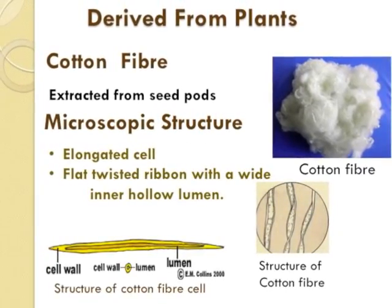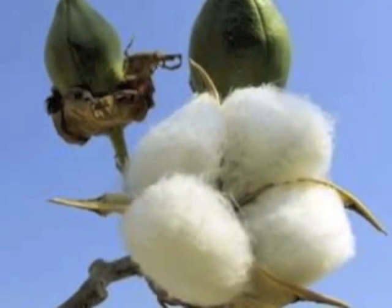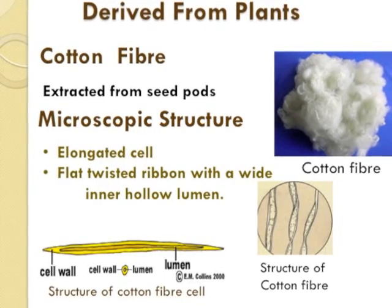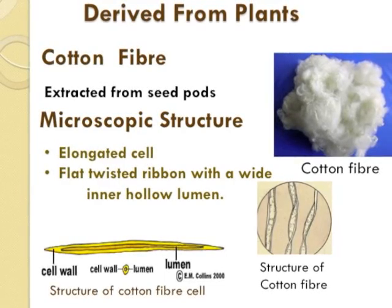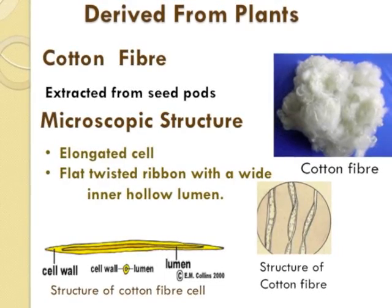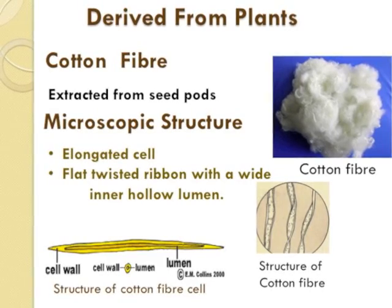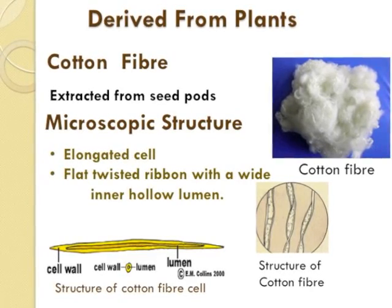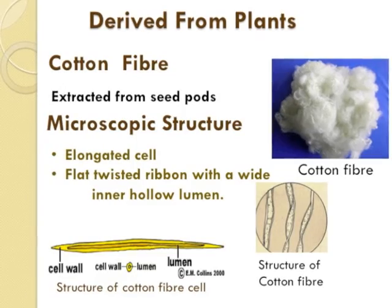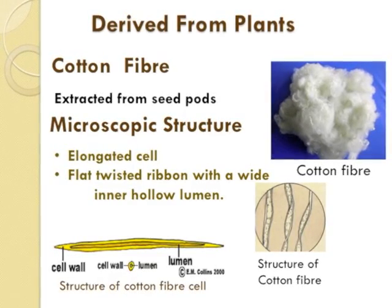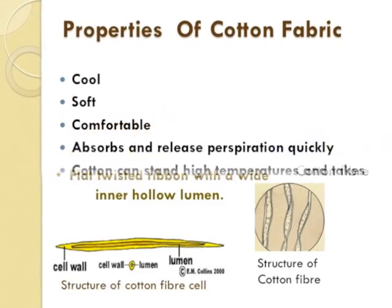Derived from plants, we get the cotton fiber which is extracted from seed pods. If you look at the seed pod fiber from a microscope, the structure you are going to see is the elongated cell — a flat twisted ribbon with a white inner halo called the lumen.